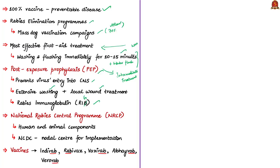Rabies immunoglobulin is a form of passive immunity — ready-made anti-rabies antibodies — that helps the victim before they can physiologically begin producing their own antibodies. It binds with the rabies virus, resulting in neutralization and loss of infectivity. In India, we have a National Rabies Control Program approved under the 12th Five Year Plan. This program has both human and animal health components, and the National Centre for Disease Control is the nodal center for its implementation.